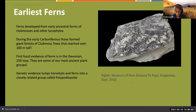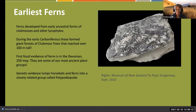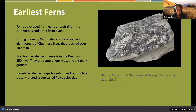Around 270 million years ago during the Carboniferous era, you start to see giant forests of club moss trees reaching over 100 meters tall. We actually see the first fossil evidence of ferns in the Devonian, which is part of the Carboniferous, around 250 million years ago - making them some of our most ancient plant groups.